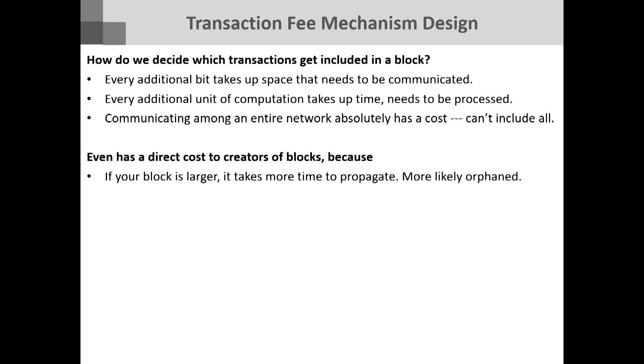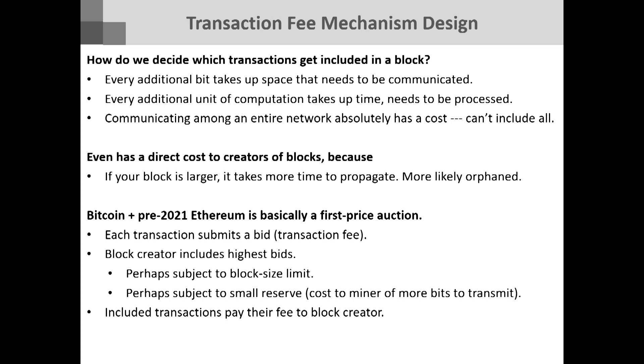Even to the creator of the block, including too much stuff causes it to take longer to propagate and makes you more likely to be orphaned in longest-chain protocols like Bitcoin or the former Ethereum. So there's a cost to a lot of people involved in including stuff. Around 2018, there's a paper that first observed that this really is an instance of auction design. What was happening before then — and what's currently happening in Bitcoin — is they're just running a first-price auction.